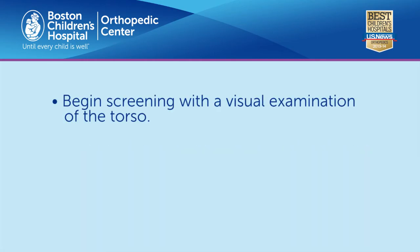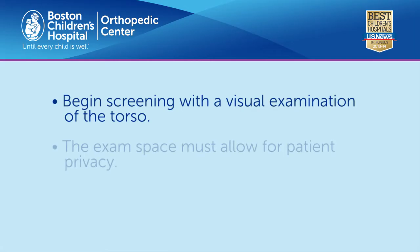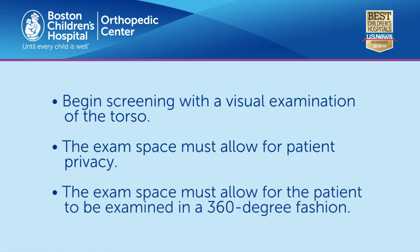The initial phase of a postural screening program begins with visual examination of the torso by a trained examiner. The exam should occur in a space where patient privacy can be maintained and sufficient space is available so that the adolescent can be observed in a 360-degree fashion. The examiner can circle the adolescent or the adolescent can change position, as shown in this video.